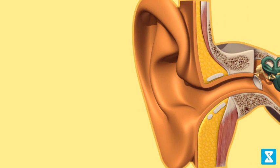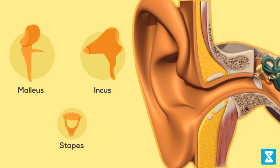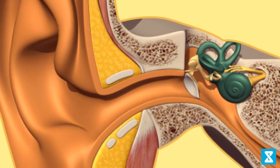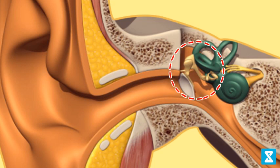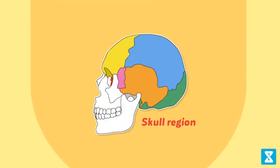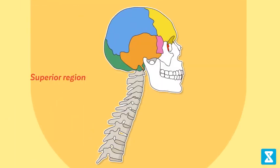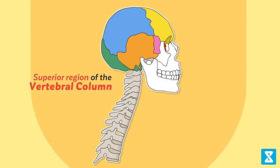Each middle ear consists of three tiny bones called the malleus, incus, and stapes — the stapes being the smallest bone of the body. These three collectively form the ear ossicles. The skull region joins with the superior region of the vertebral column with the help of two occipital condyles, called a dicondylic skull.